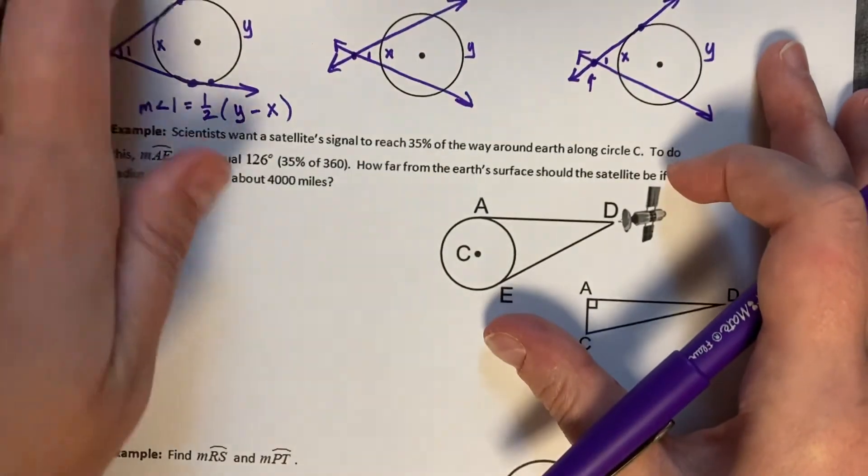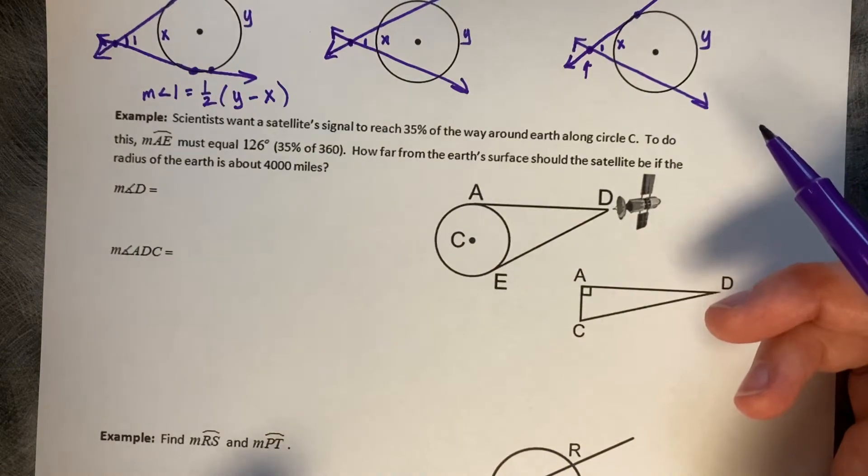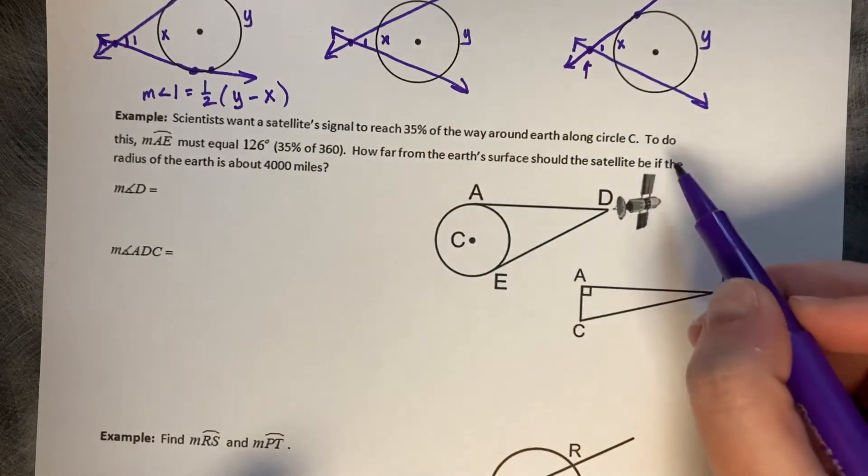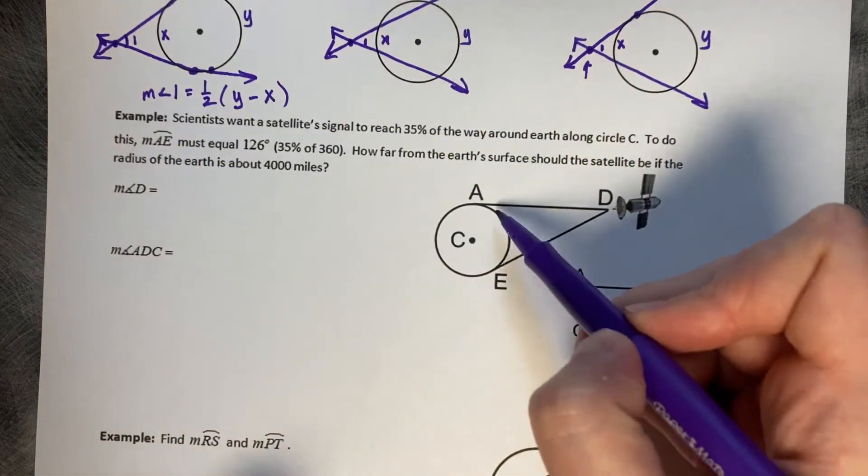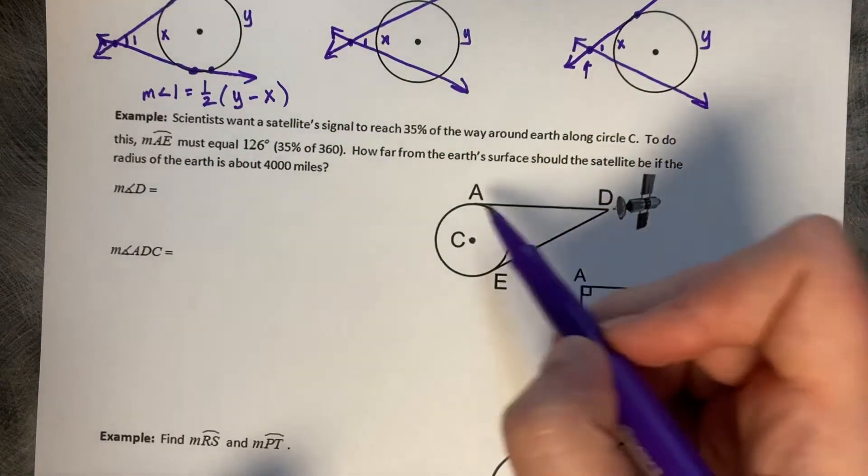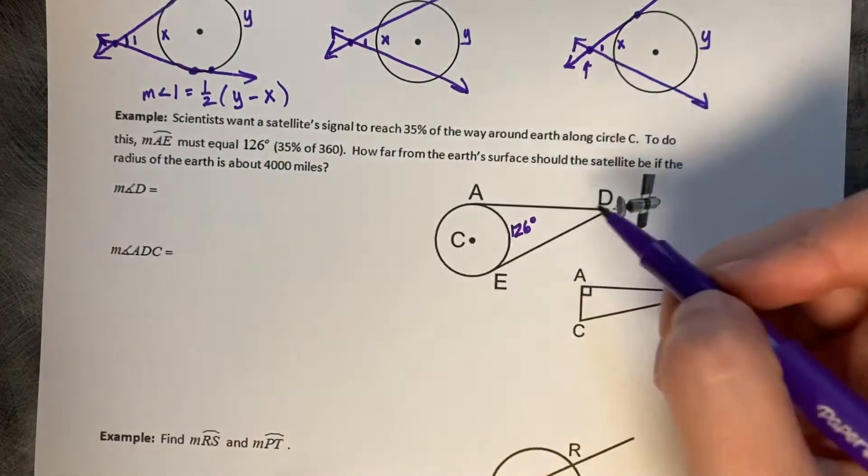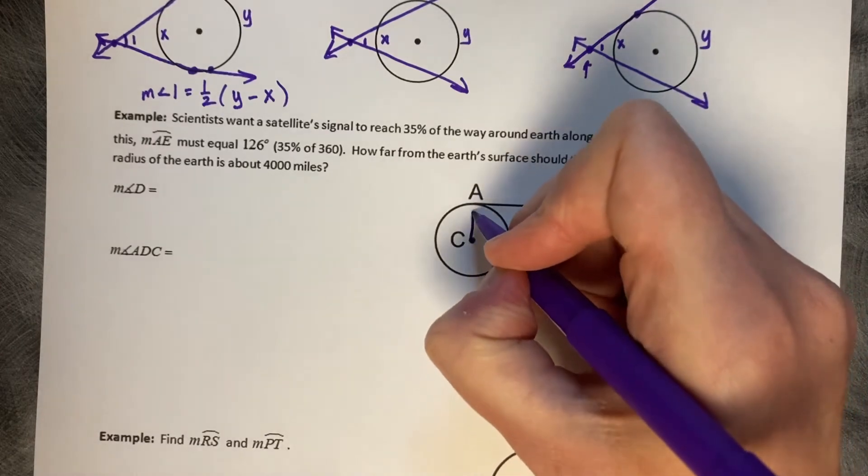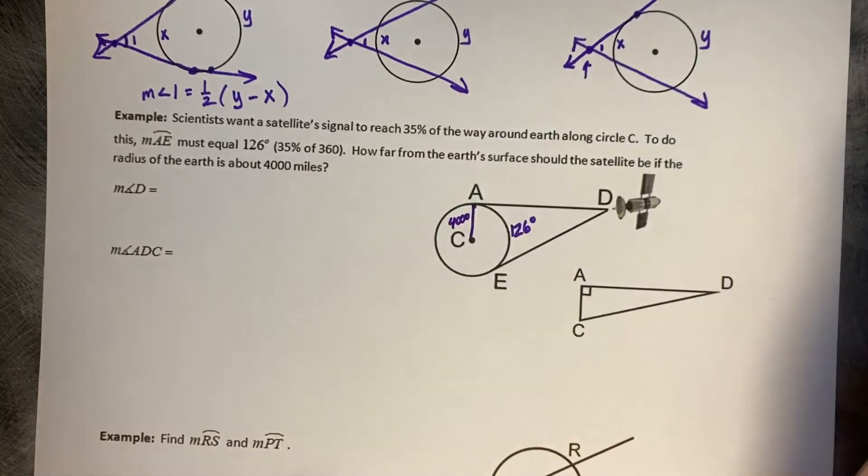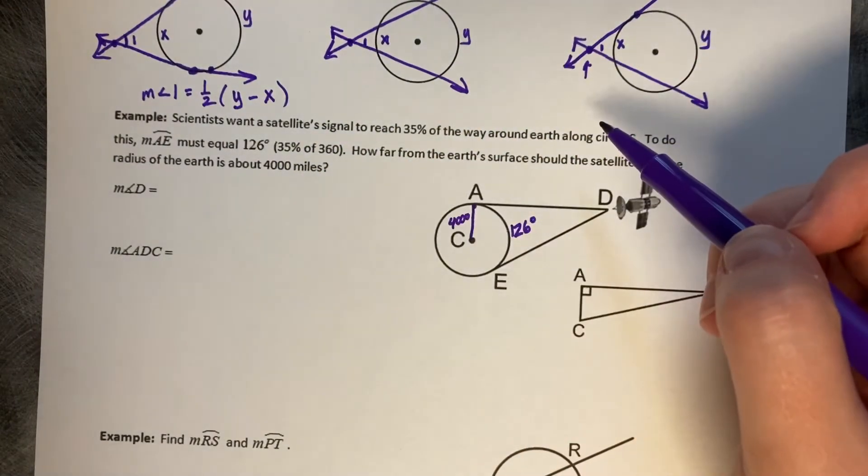So, scientists want a satellite signal to reach 35% of the way around the Earth along Circle C. To do this, the measure of AE must equal 126 degrees, which is 35% of 360. I know AE needs to be 126 degrees. How far from the Earth's surface should the satellite be if the radius of the Earth is about 4,000 miles? So, I'm going to draw that in right there, 4,000 for the radius of our Earth.